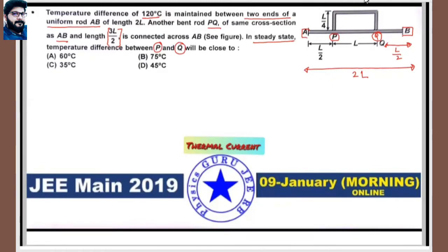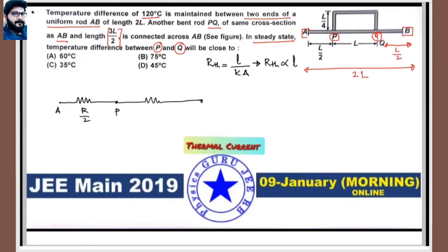To solve this, we work in terms of thermal resistance. Since thermal resistance R ∝ length, we assign: resistance from A to P is R/2, from P to Q (direct path along AB) is R, from Q to B is R/2, and the rod PQ itself has resistance 3R/2.